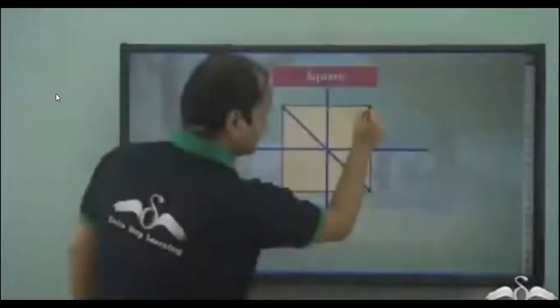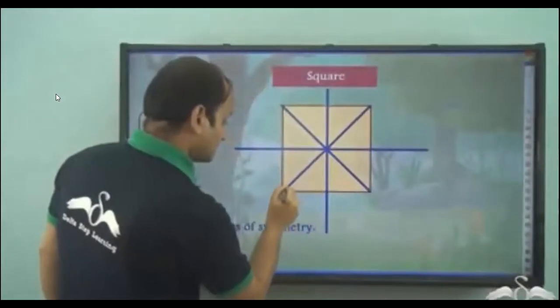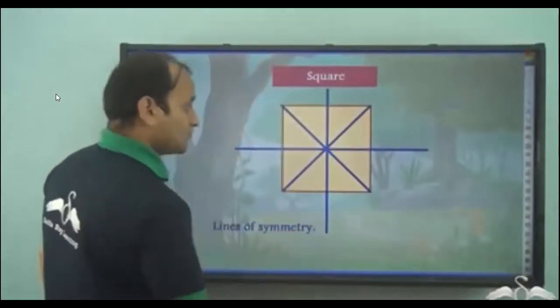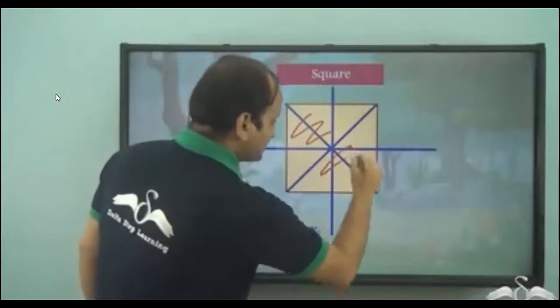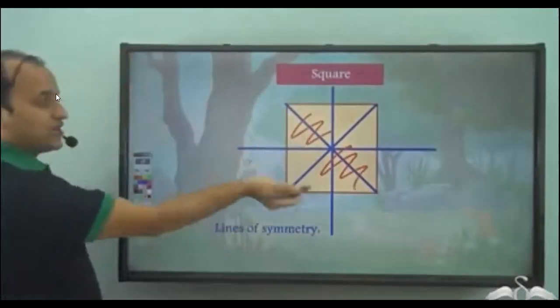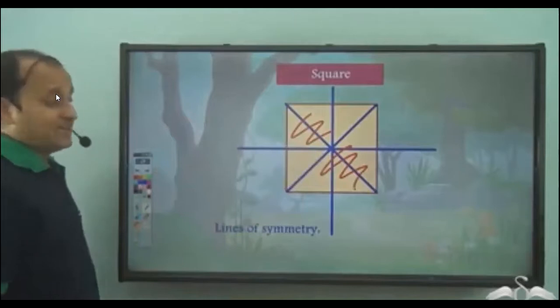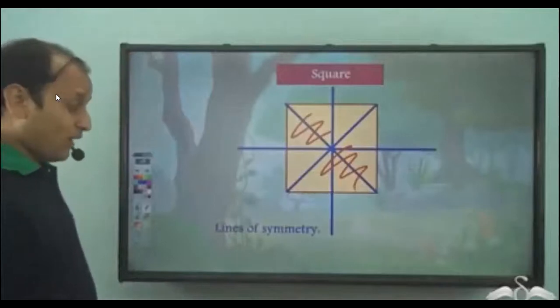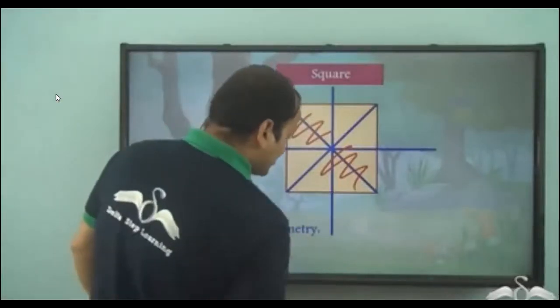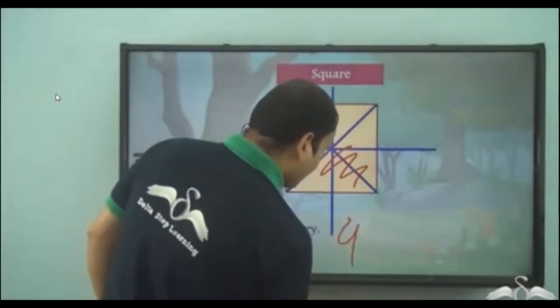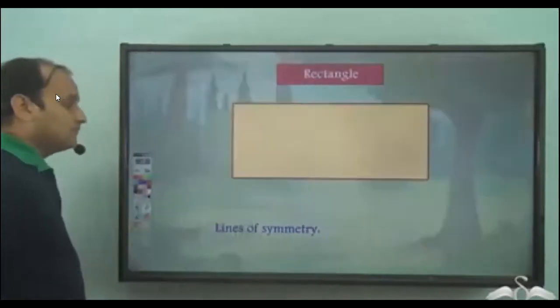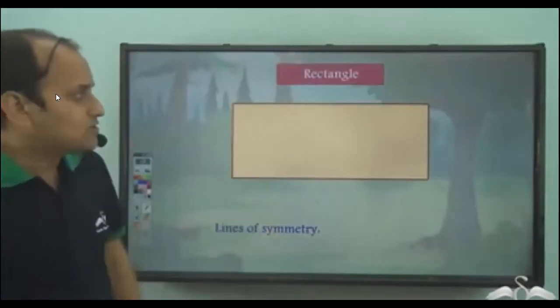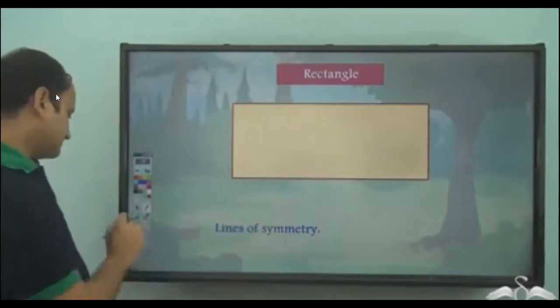This line also gives us two halves which are mirror images of each other. So in total, we have four lines of symmetry in the case of a square. Now what about a rectangle?